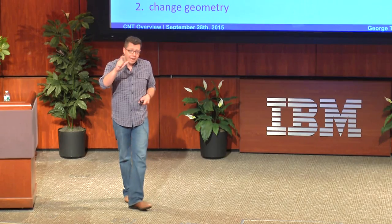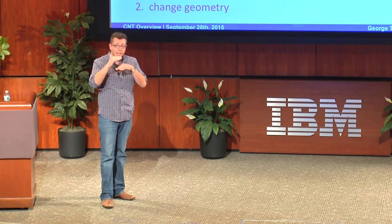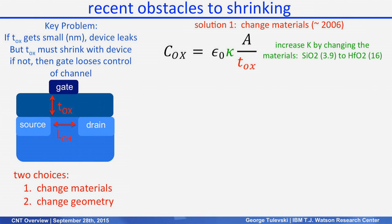Around 2005-2006 we had a dilemma with two choices: change the material or change the geometry. The industry first decided to change the material. It's not really the oxide thickness that matters — it's the capacitance, since the goal is to keep the field constant in the channel. Capacitance equals the dielectric constant k times area over t_ox. If I can't shrink t_ox, I have to increase k to keep capacitance constant. That's what we did by going from silicon oxide to hafnium oxide, giving a 4x increase in k, which allows the same capacitance with an oxide four times thicker. But this has an endpoint too — we keep scaling and eventually run into the same problem.